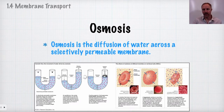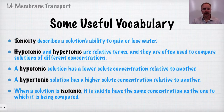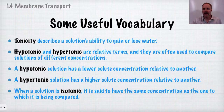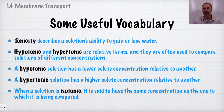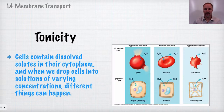There are a few terms we need to know regarding the movement of these substances. Tonicity describes a solution's ability to gain or lose water. Hypertonic and hypotonic are relative terms used to compare concentrations of two solutions. A hypotonic solution has a lower solute concentration relative to the other, while a hypertonic solution has a higher concentration of solute molecules. If the two solutions are equal, we say they are isotonic — they have the same tonicity.